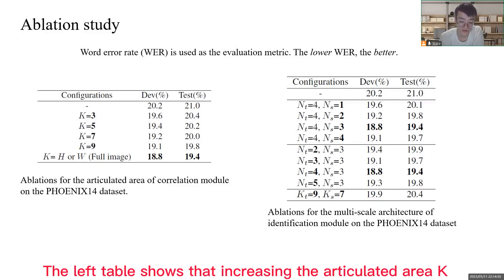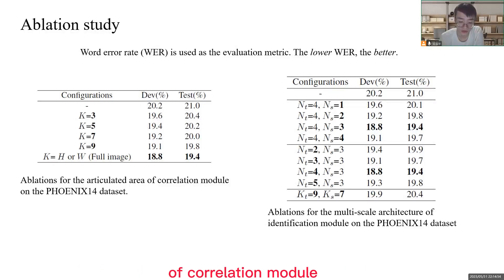The left table shows that increasing the articulated area K of correlation model consistently brings better performance. The right table shows that either increasing N_s or N_t would bring considerable accuracy boost, verifying the effectiveness of the proposed multi-scale aggregation architecture.